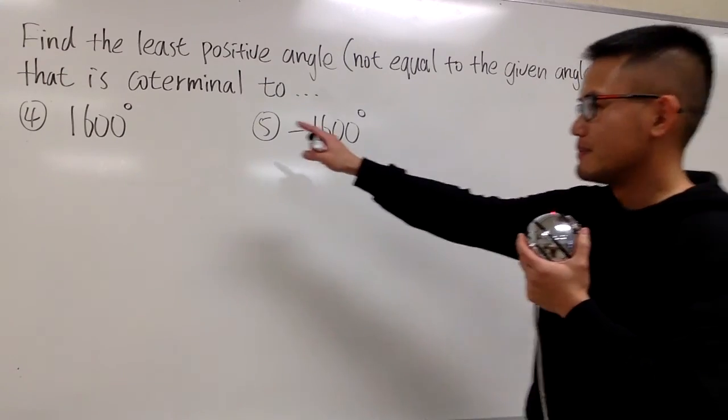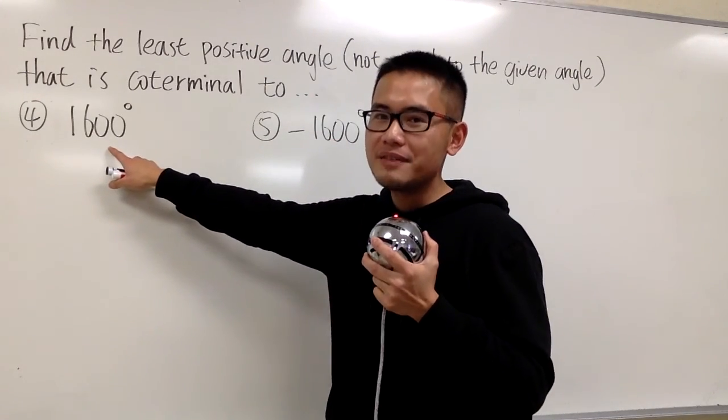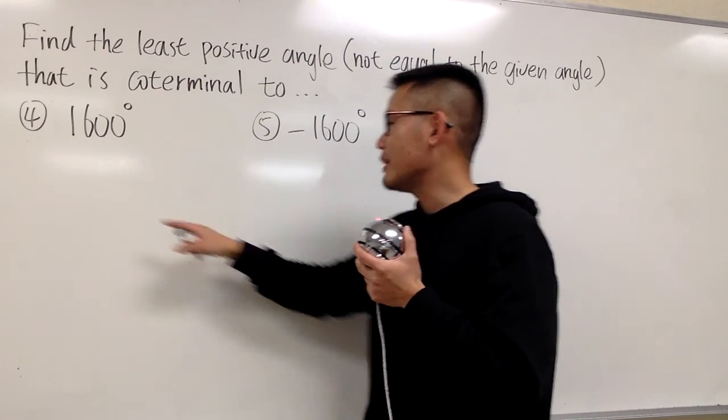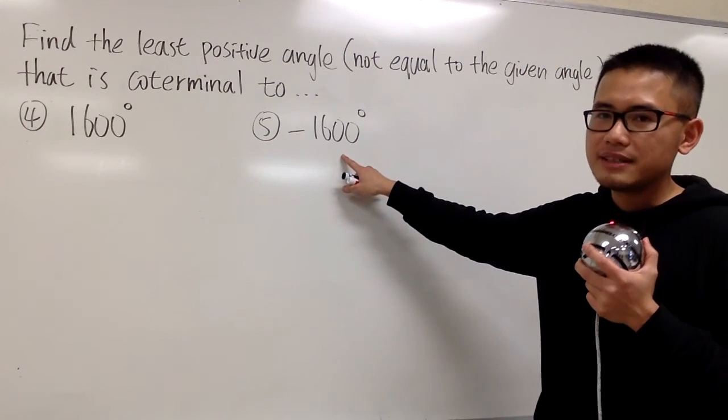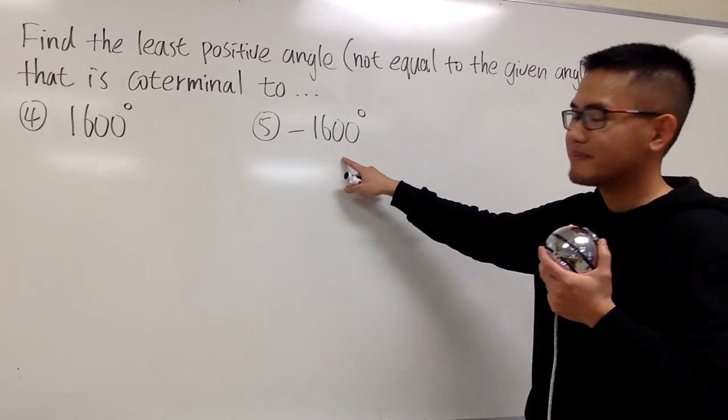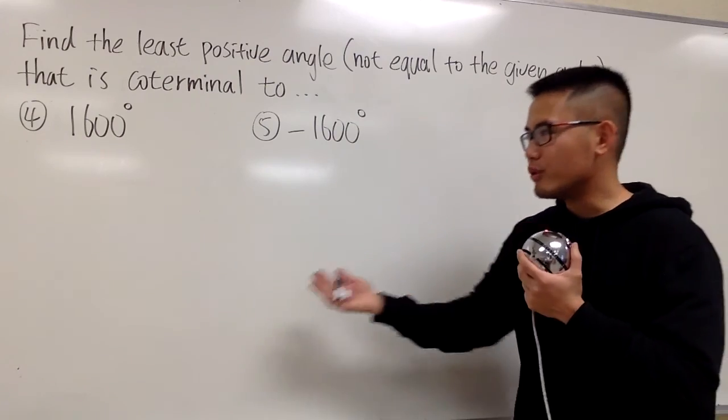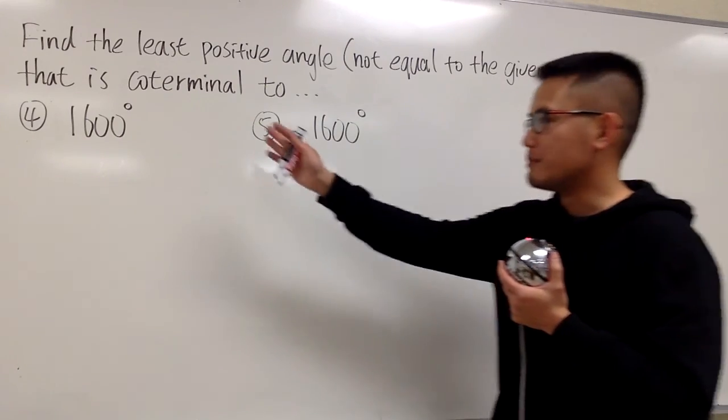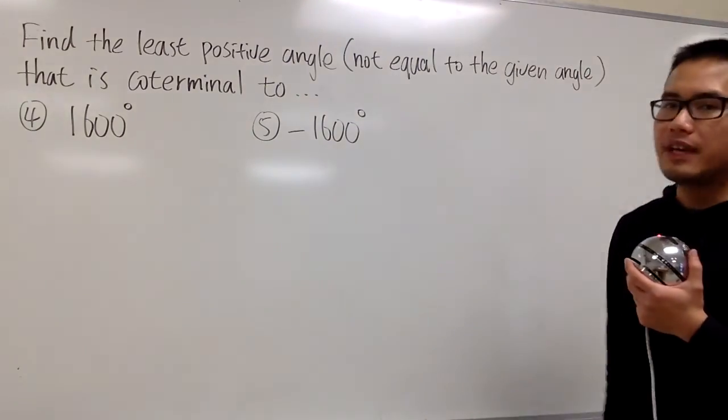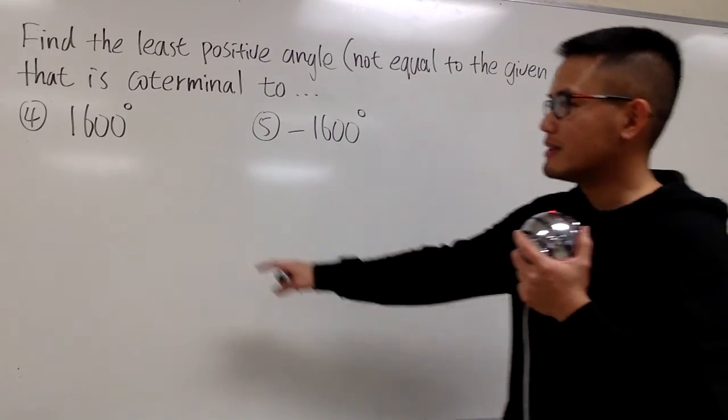Right here, notice that this is positive 1600 degrees, and this is negative 1600 degrees. You'll see the style of doing these kind of questions will be different when you have positive versus negative angles. Anyways, let's focus on this one first.